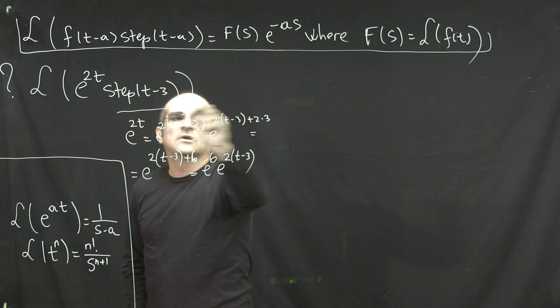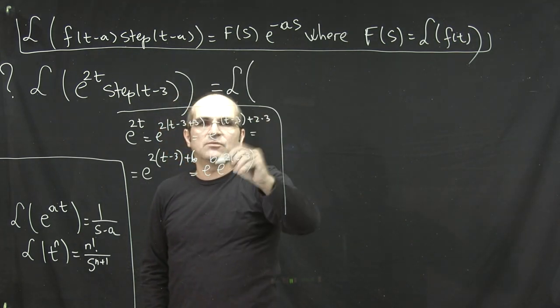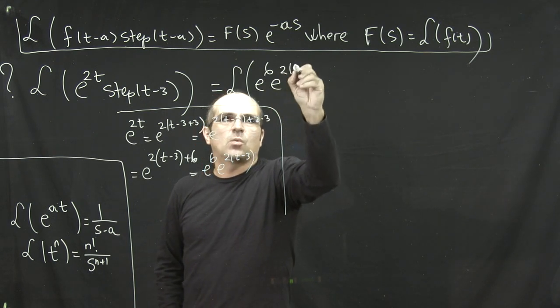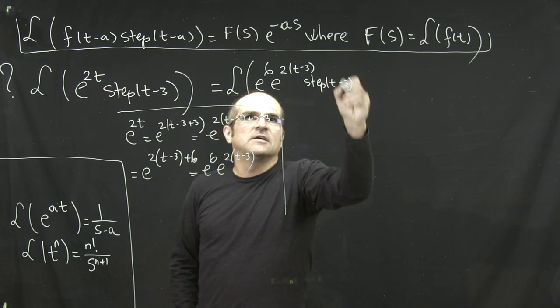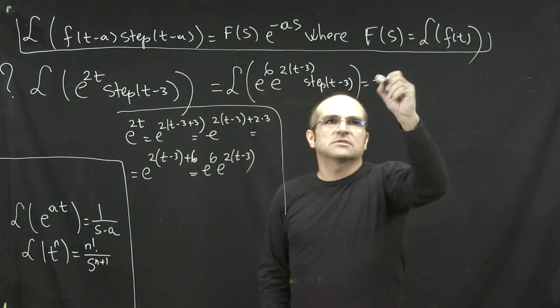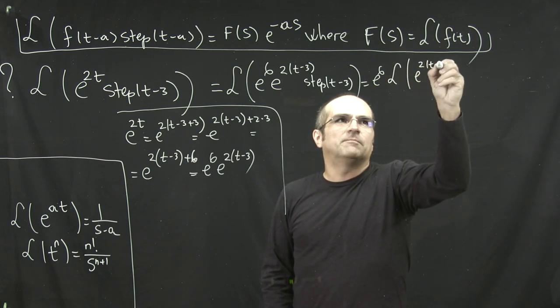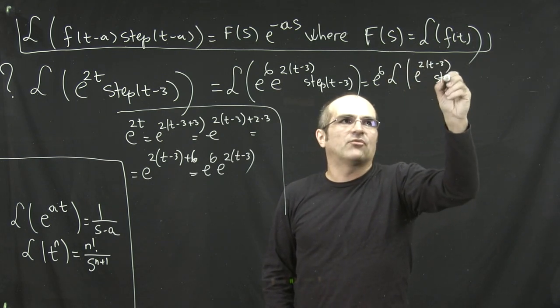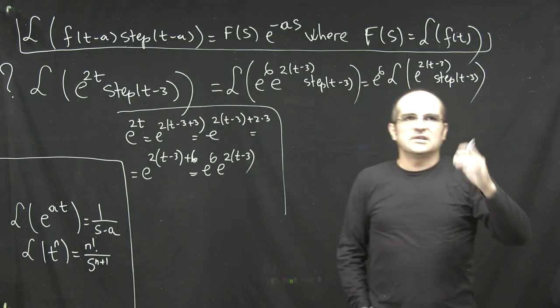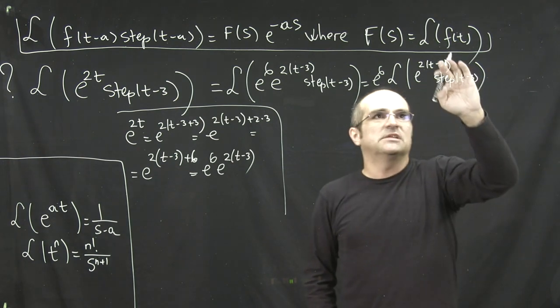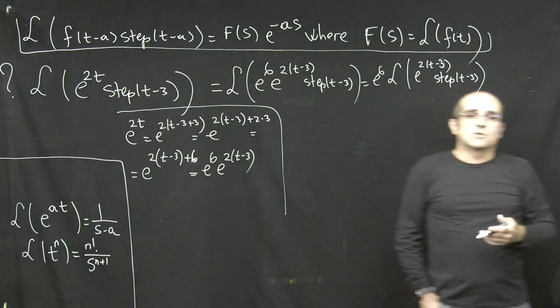So now when you continue with the delay theorem over here, you replace your e to the 2t with e to the 6 times e to the 2(t-3). And then e to the 6 can be pulled out via linearity property. And finally your function is in the proper form for the delay theorem. I want you to realize that at this point we didn't even touch the delay theorem yet. All we did here was just writing the function in the proper form so I can use the delay theorem.